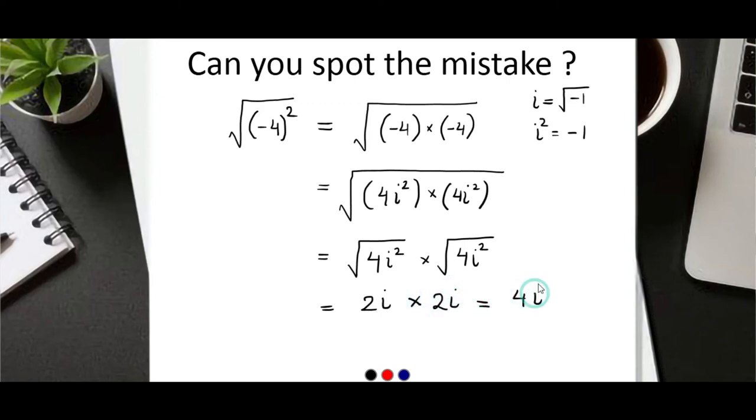2 times 2 is 4, i times i is i squared, and i squared is minus 1, so minus 4, which is the incorrect answer.